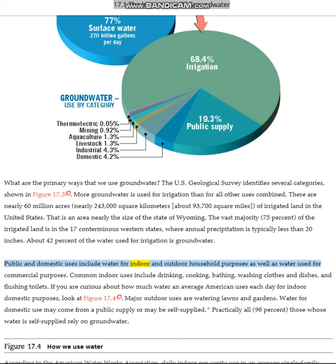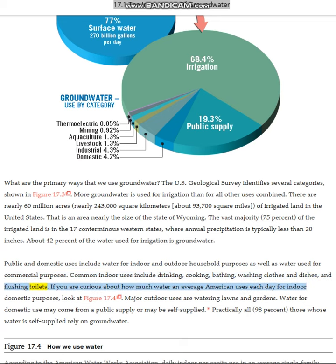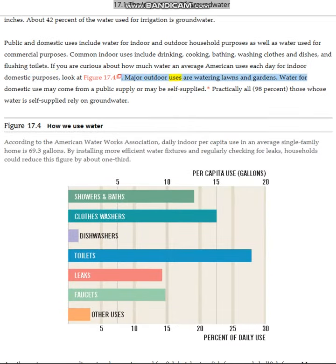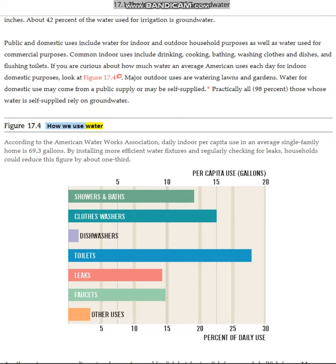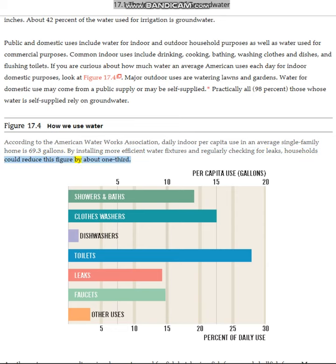Public and domestic uses include water for indoor and outdoor household purposes as well as water used for commercial purposes. Common indoor uses include drinking, cooking, bathing, washing clothes and dishes, and flushing toilets. Major outdoor uses are watering lawns and gardens. Water for domestic use may come from a public supply or may be self-supplied; practically all — 98% — of those whose water is self-supplied rely on groundwater. According to the American Water Works Association, daily indoor per capita use in an average single-family home is 69.3 gallons. By installing more efficient water fixtures and regularly checking for leaks, households could reduce this figure by about one third.